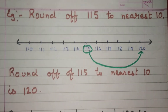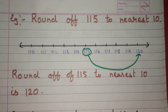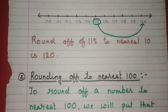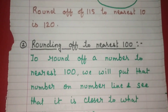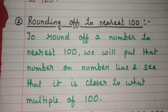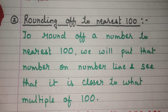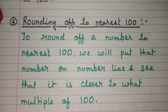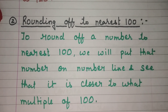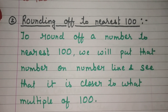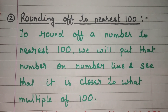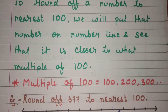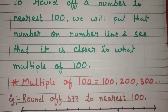So right now we have learned about rounding off of numbers to nearest 10. Now let's talk about rounding off to nearest 100. To round off a number to nearest 100, we put that number on a number line and see which multiple of 100 it is closest to — that is 100, 200, 300, etc.